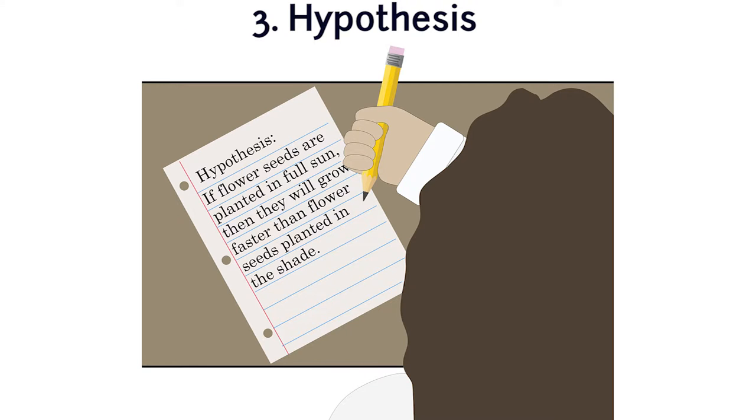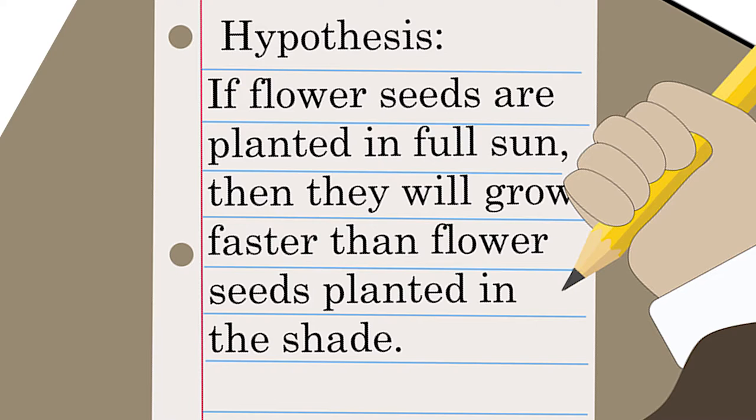The third step is to make a hypothesis. A hypothesis is a good guess for answering a question based on background research. It predicts what will happen in an experiment. For example, you might write a hypothesis that says, if flower seeds are planted in full sun, then they will grow faster than flower seeds planted in the shade.